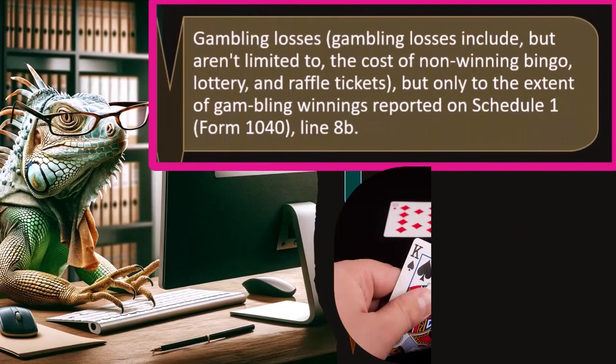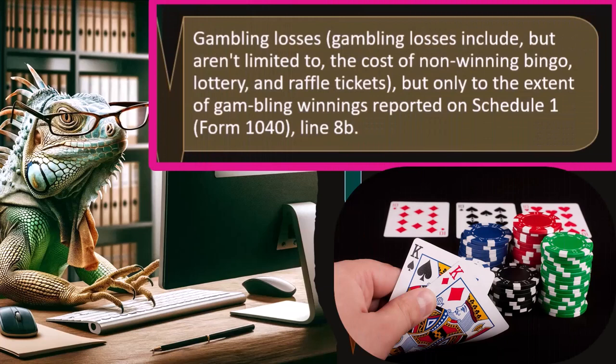So we have gambling losses. Gambling losses include, but are not limited to, the cost of non-winning bingo, lottery, and raffle tickets, but only to the extent of gambling winnings reported on Schedule 1, Form 1040, Line 8B. If gambling winnings and losses sound familiar, it's because we discussed it on the income side — if you participated in gambling, you might have to record the winnings as income, because the general IRS perspective is that anything you receive is taxable income unless the IRS says otherwise, and that generally includes gambling.